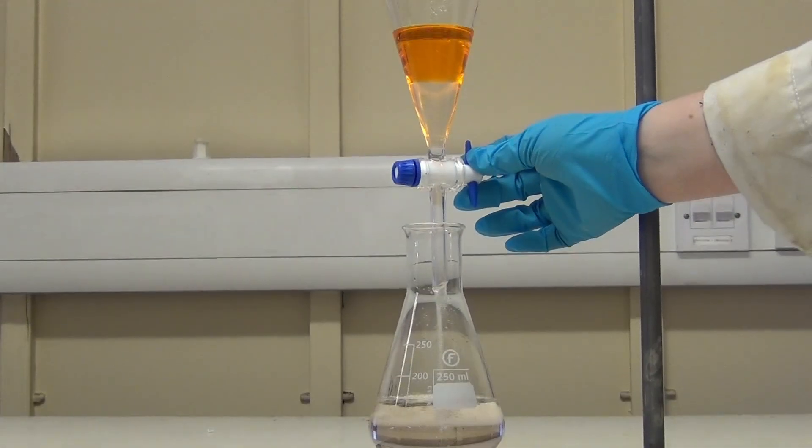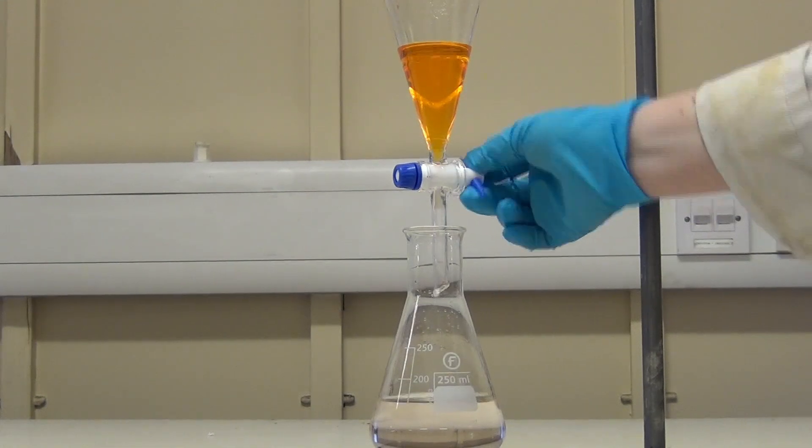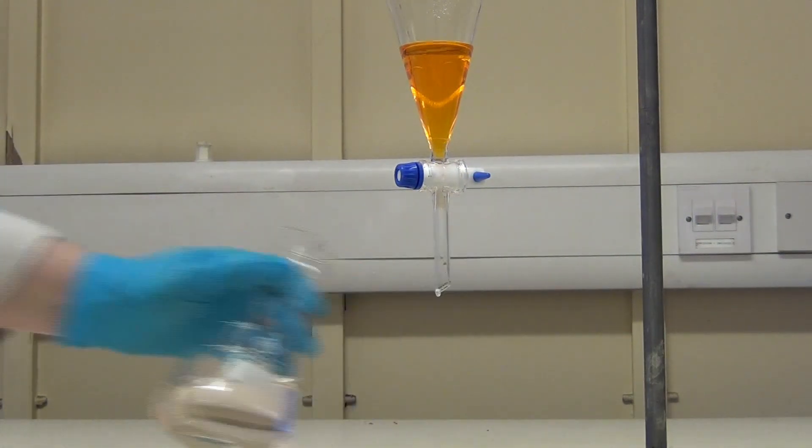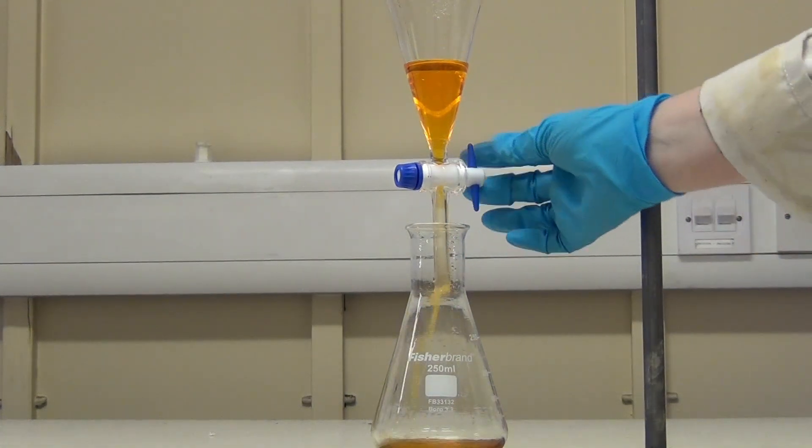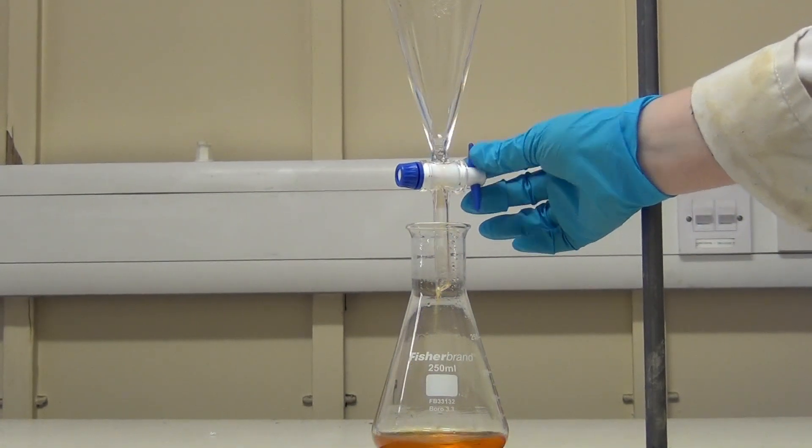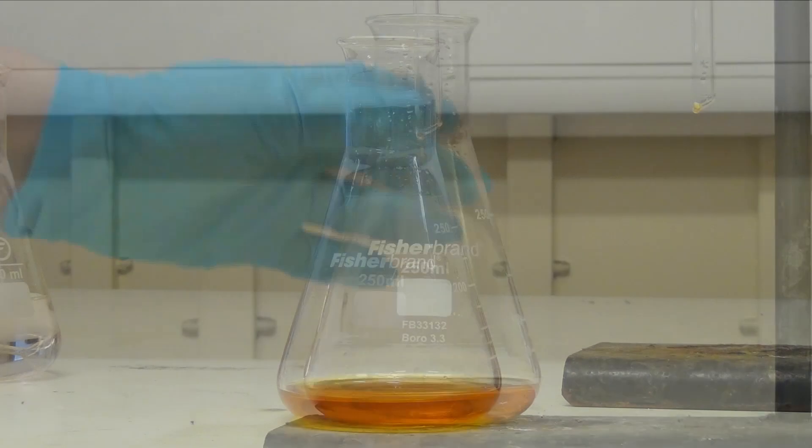And it is better to collect the layer that you want, in this case the organic layer, into a new, clean, conical flask after each separation. By repeating the extraction process, it ensures maximum separation and therefore helps to maximise the yield of your final product.